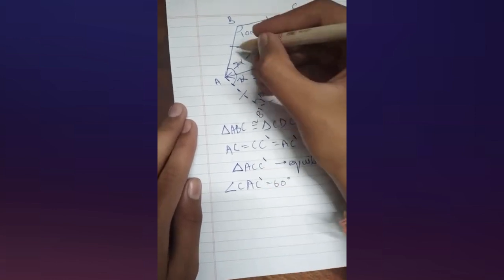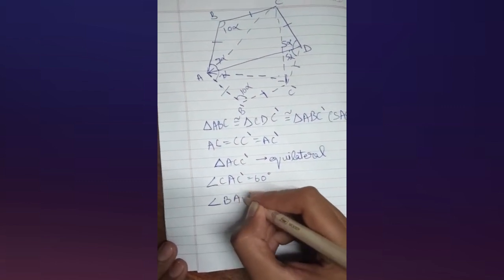Hence the angle CAC' is equal to 60 degrees. And we can also write this angle in terms of alpha. We know that triangle BAC and triangle B'AC' are isosceles. So the angle BAC would be equal to 180 minus 10 alpha divided by 2.